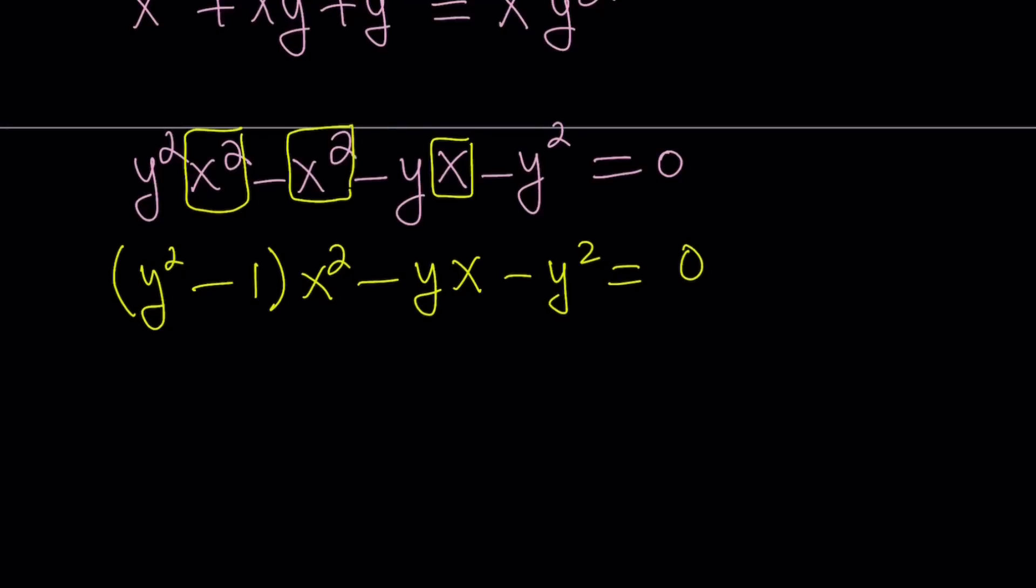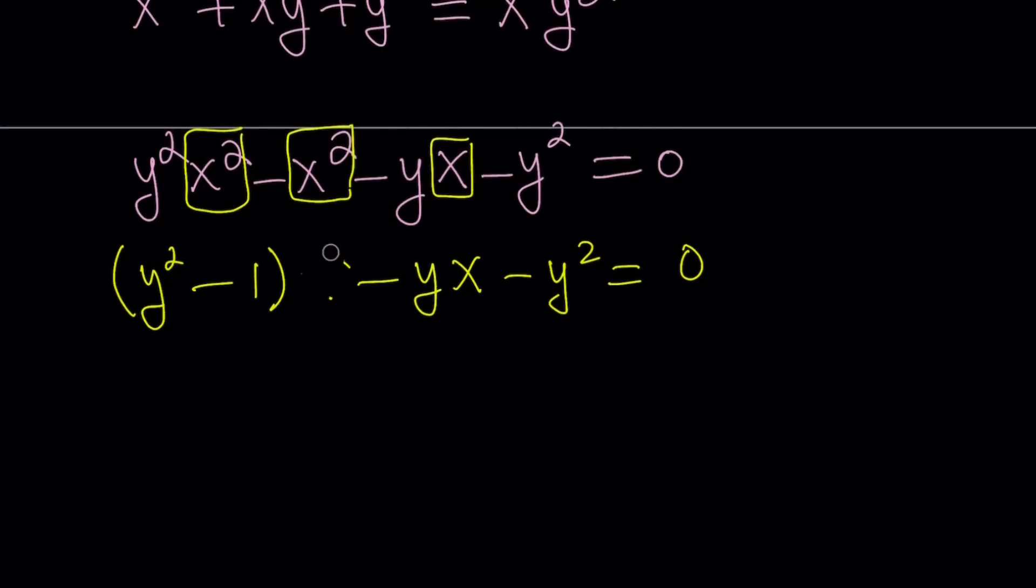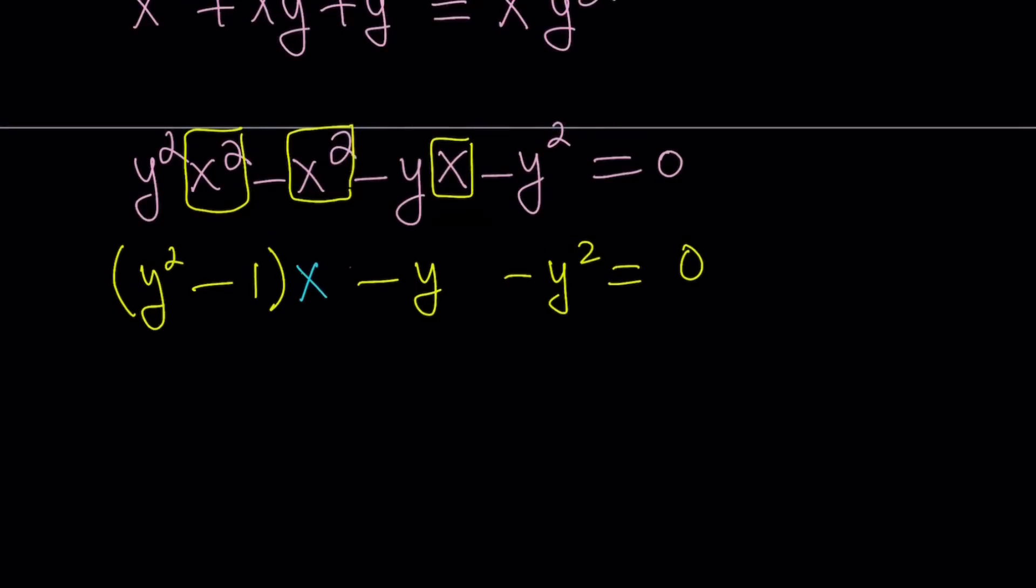So this is now an equation, a quadratic equation in x. Let me make it a little more clear by writing it differently. So this is going to be x squared, and this is going to be x. So this is a quadratic in x, and we can use the quadratic formula. But a couple things to be careful about.